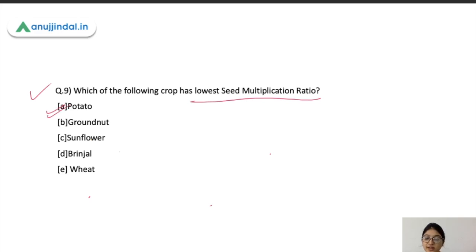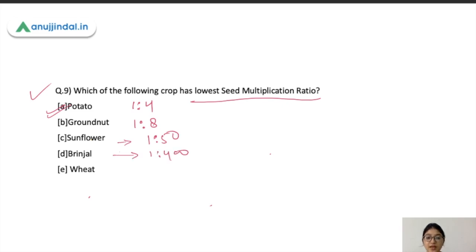The correct answer for the crop with the lowest seed multiplication ratio is potato. Important SMR values to remember: potato is 1:4, groundnut is 1:8, sunflower is approximately 1:50, wheat is 1:20, and brinjal is approximately 1:450. Since potato has the lowest SMR of 1:4, the correct answer is A.